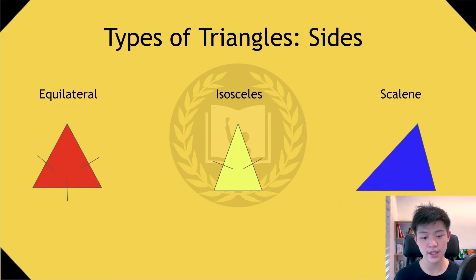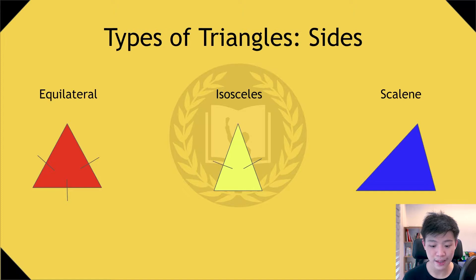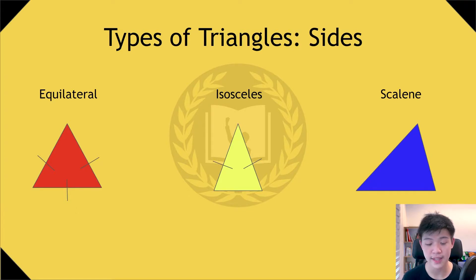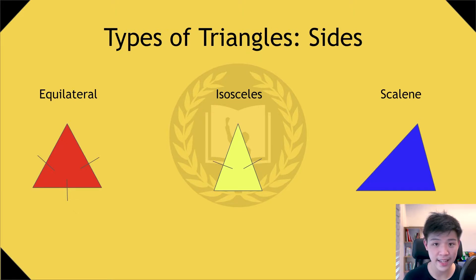Next, we will introduce some types of triangles. If we look at the sides, we get three kinds of triangles: equilateral, isosceles, and scalene. An equilateral triangle means all three sides are equal. An isosceles triangle must have two congruent sides, whereas the scalene has no congruent sides.